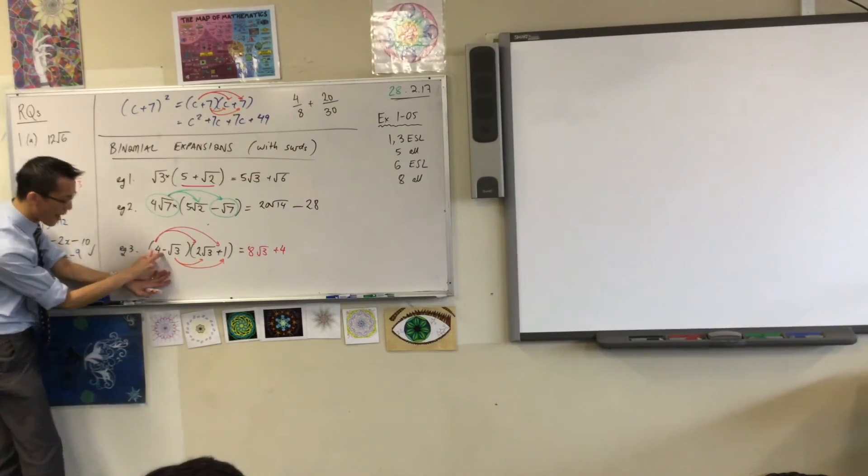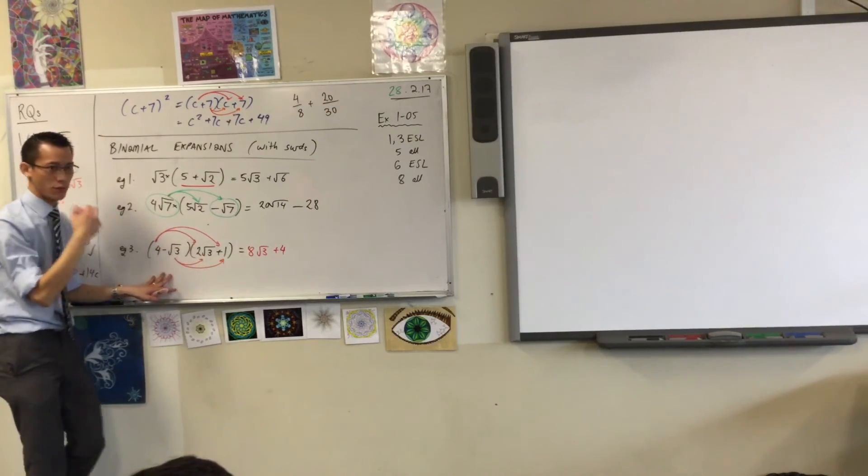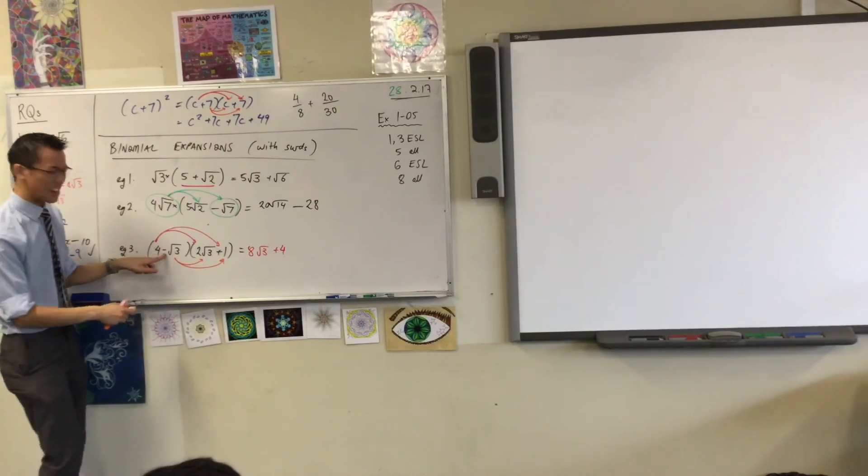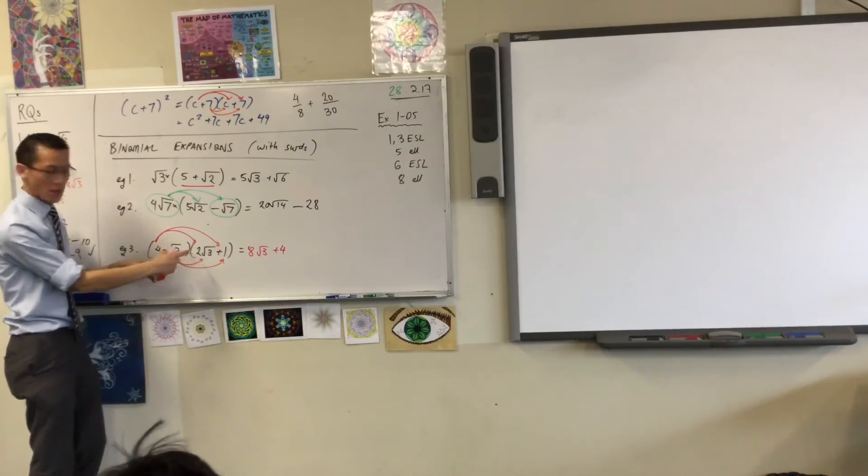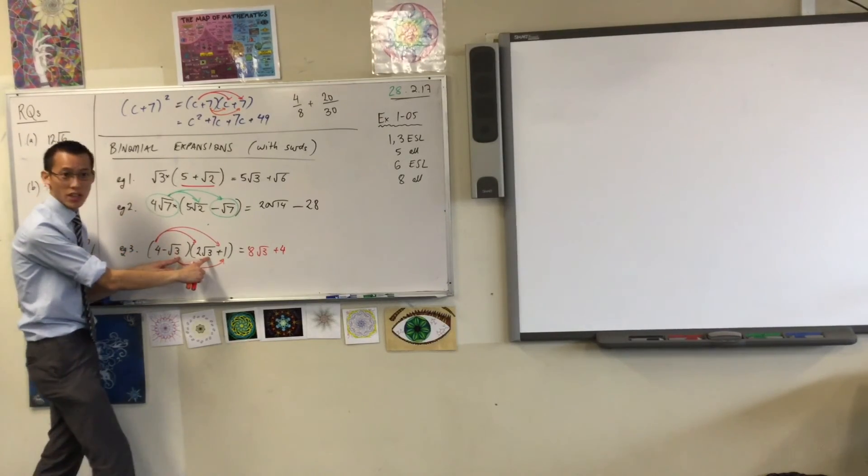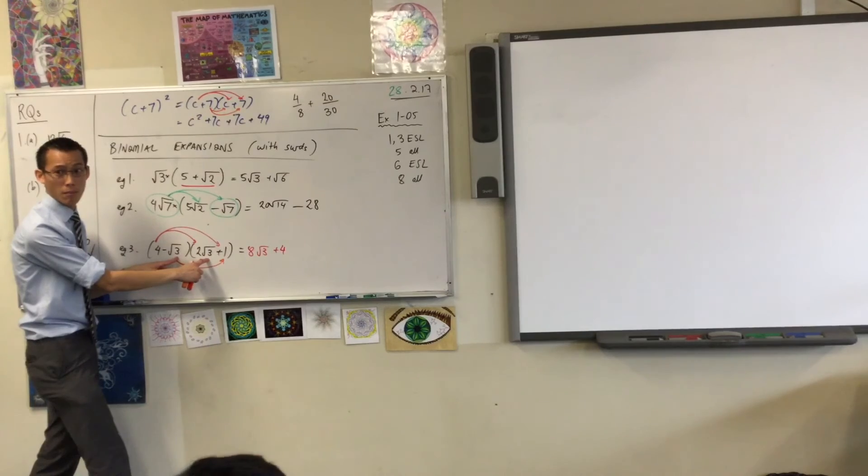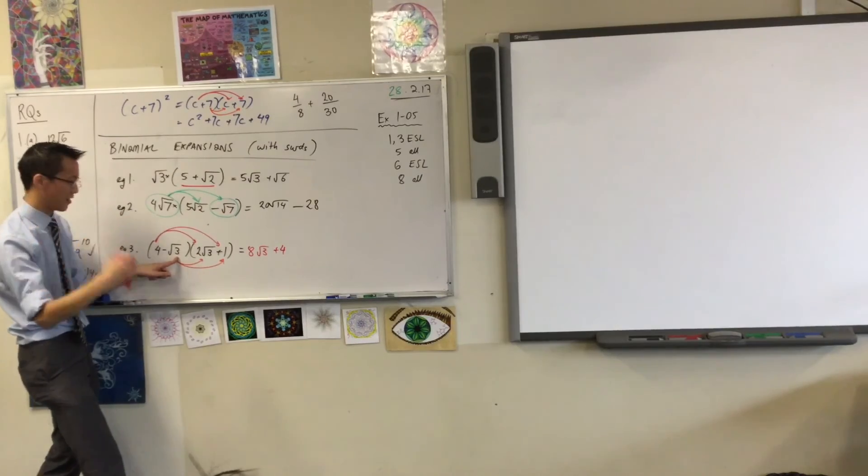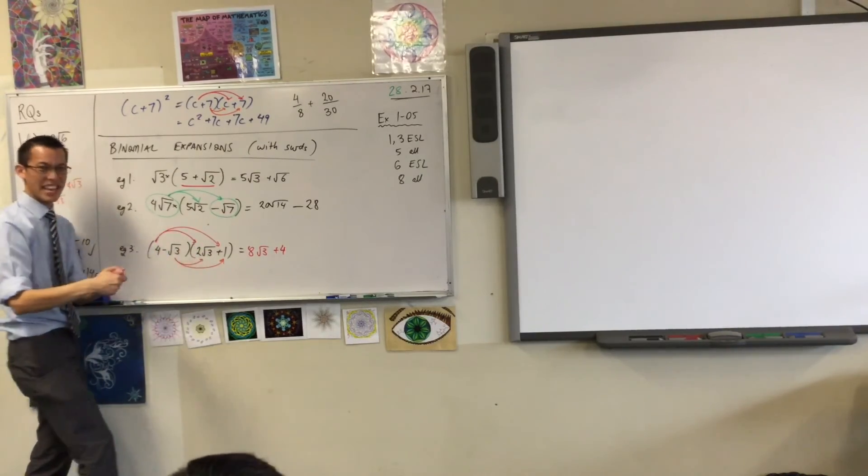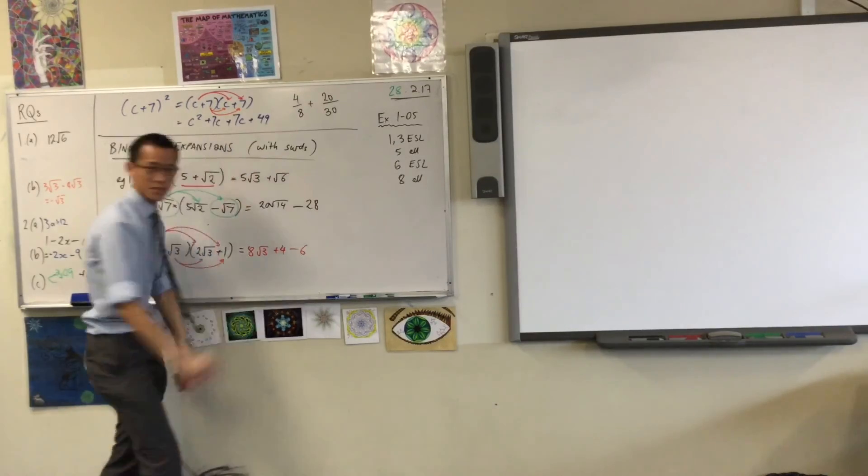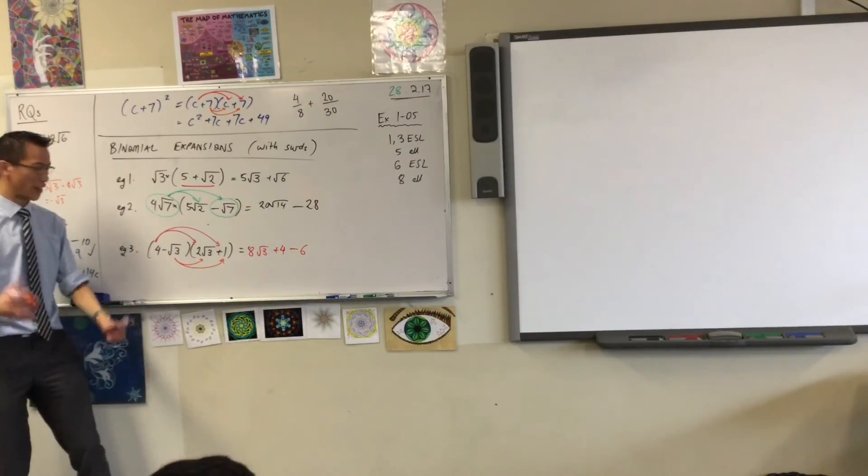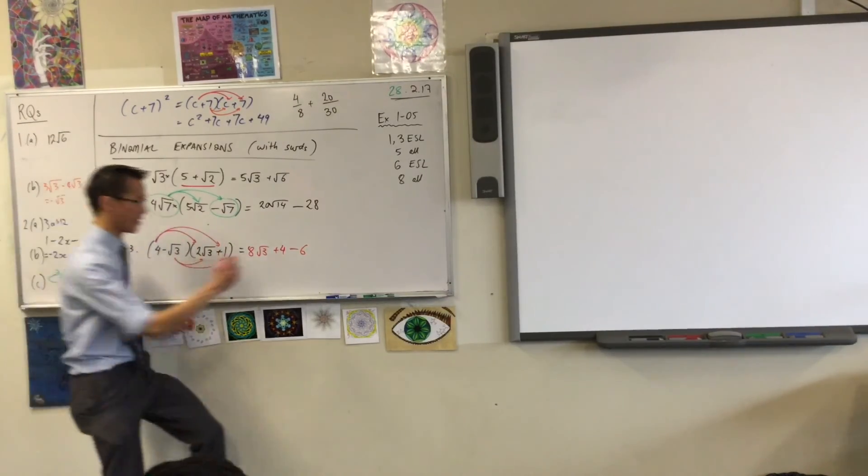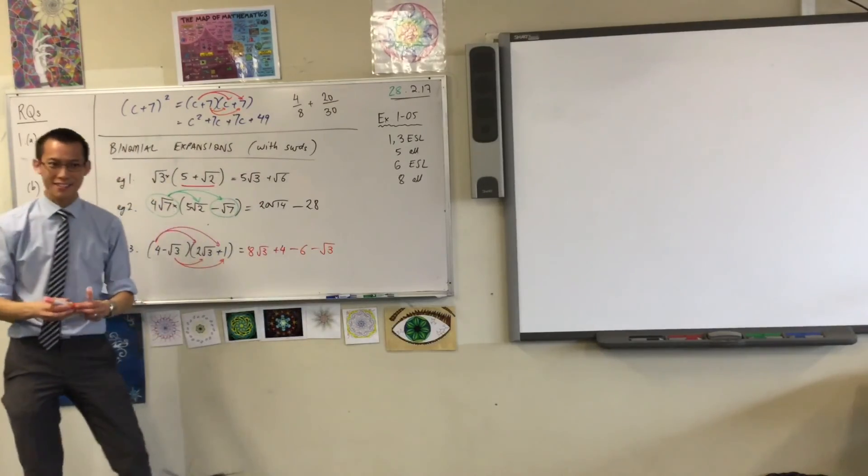Okay? This one's a bit trickier. Minus √3 times 2√3. Deal with your whole numbers. What are your whole numbers? You've got a minus 1 and a 2. Do you agree? So therefore it'll be minus 2. Then you deal with your surds. √3 times √3. √3 times √3 is just 3. It's just 3. So I've got minus 2, then I've got 3. That's minus 6. Are you okay? It is minus 6 once you put it all together. Last bit. Minus √3 times 1. Minus √3. Okay? Well done.